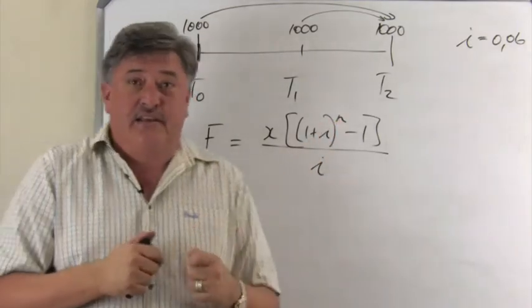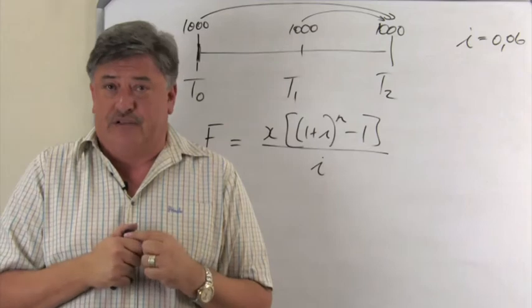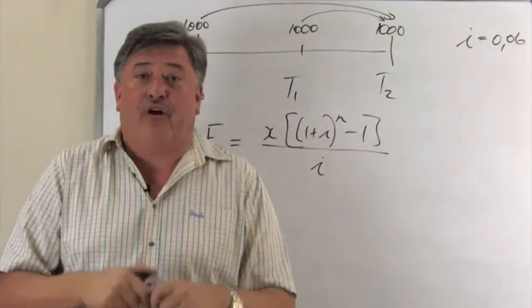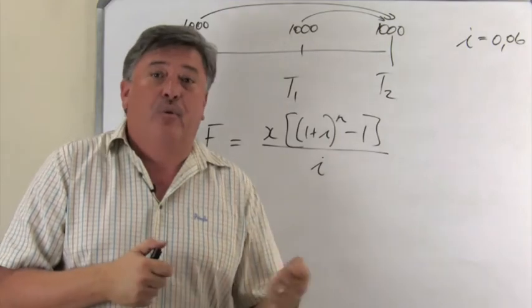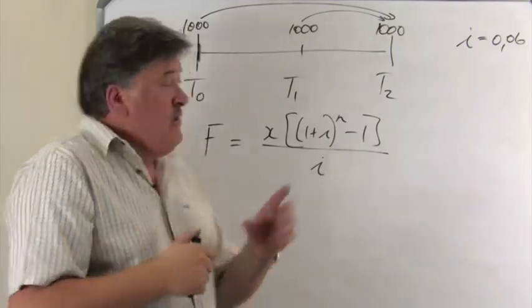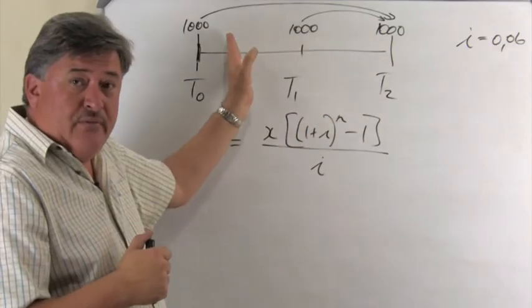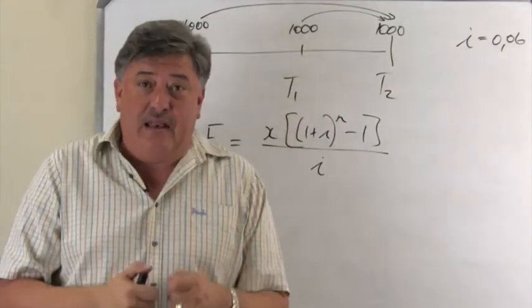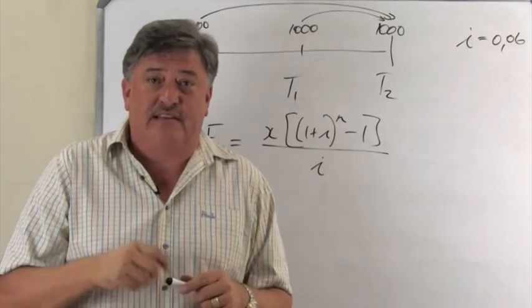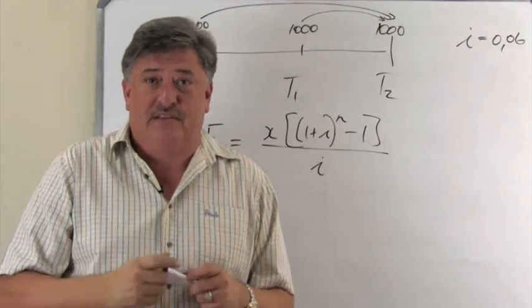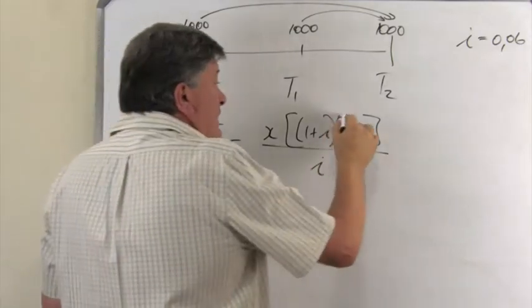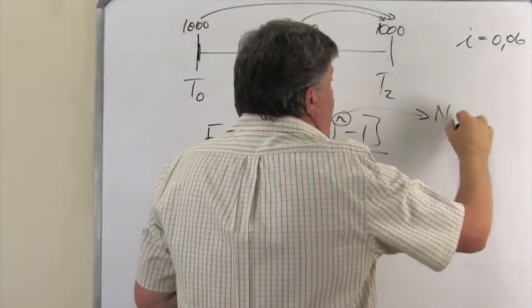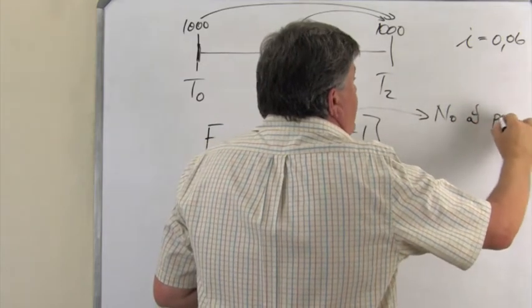N, and that is the very important thing to take note of. N is not the number of months like we did in compound interest. Because as you can see here, it was a two-month period, but there were three payments. So N in this problem represents the number of payments. So it is extremely important to remember the number of payments.